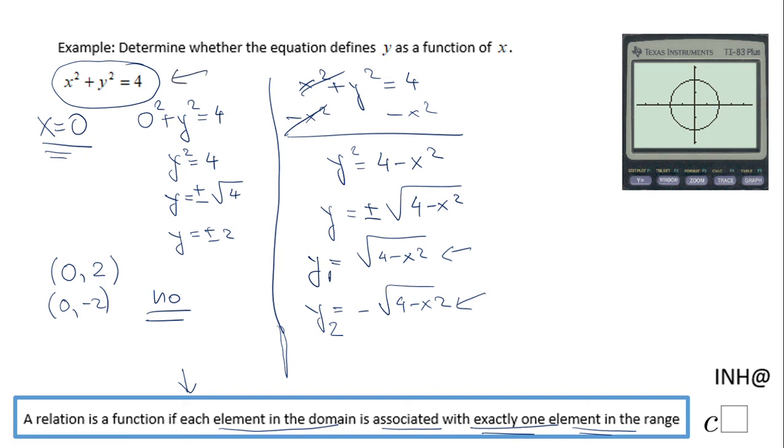We can look here using the vertical line test, which means you draw vertical lines mentally. And if you notice that you have this situation, more than one intersection point, then you know this is not a function.